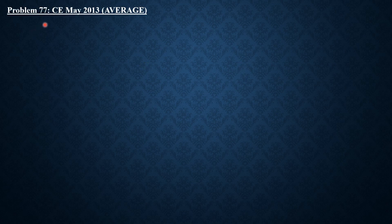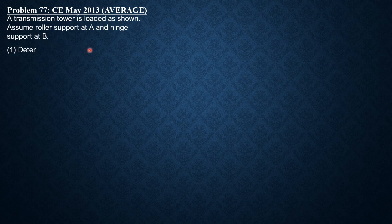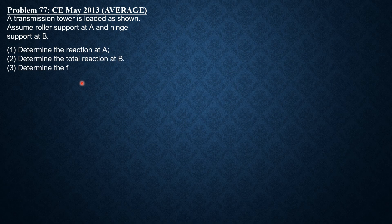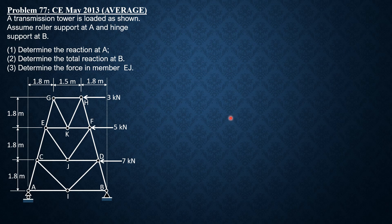For the last problem, similar to May 2013: a transmission tower is loaded as shown with a pin support at B and roller support at A. Determine the reaction at A, the total reaction at B, and the force in member EJ. We expect a vertical reaction RA upward at A. The horizontal forces sum to 3+5+7 = 15 kilonewtons rightward at B.